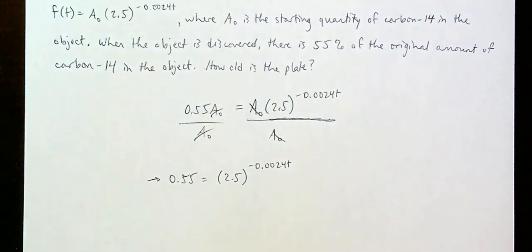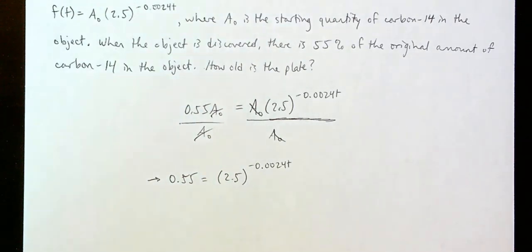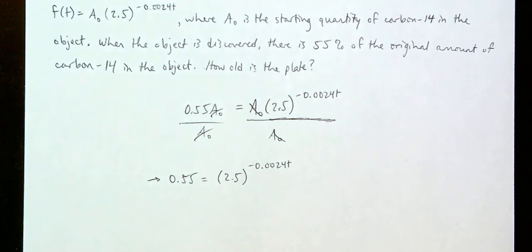I'm going to challenge you: pause the video here and try to solve through this problem on your own. Try to figure out what your t-value is going to be, and round it to the nearest whole number. Press pause, try to solve it, and once you think you have the answer, press play and we'll see if you were correct.